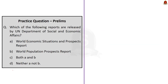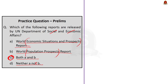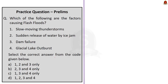Question three: Which of the following reports are released by the UN Department of Economic and Social Affairs? Option A: World Economic Situations and Prospects Report. Option B: World Population Prospects Report. Option C: Both A and B. Option D: Neither A nor B. The correct answer is option C - both A and B. The UN Department of Economic and Social Affairs releases both the World Economic Situations and Prospects Report and the World Population Prospects Report. The fourth question is a quiz question for you - read it carefully, attempt it, and post your answer in the comment section.